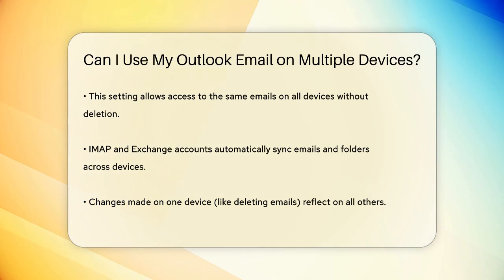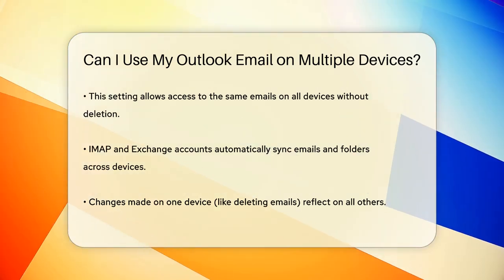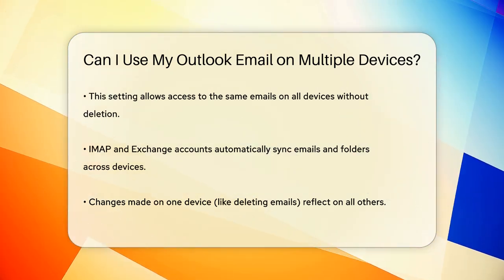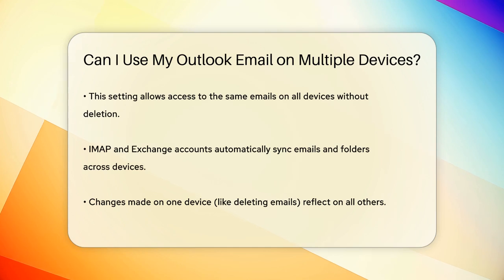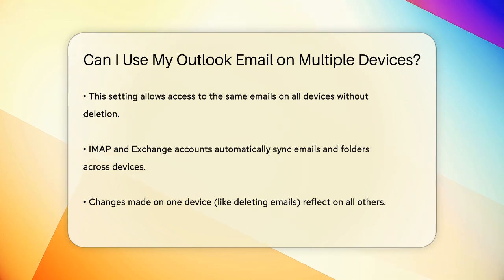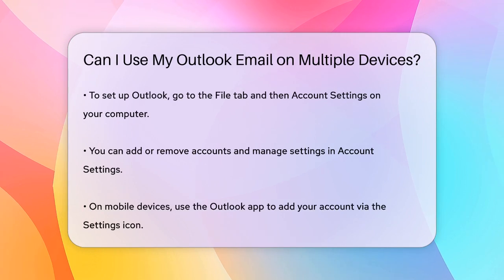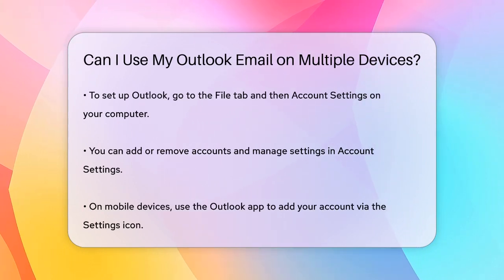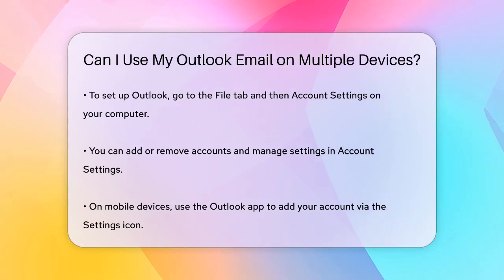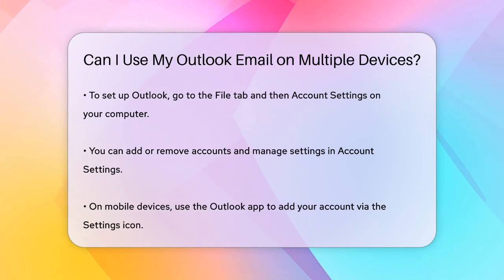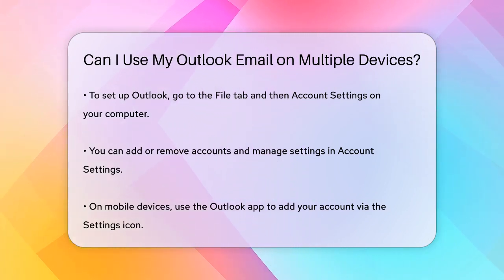To set up Outlook on multiple devices, start by launching Outlook on your computer and selecting the File tab, then Account Settings. Here, you can add or remove accounts and configure the settings for each account. For IMAP or Exchange accounts, you don't need to do anything extra — just add the account and Outlook will handle the syncing.